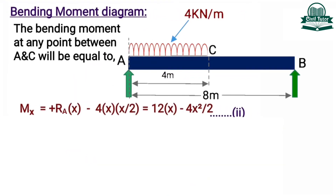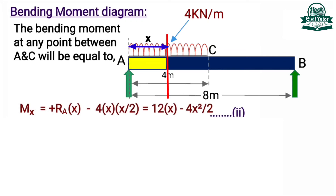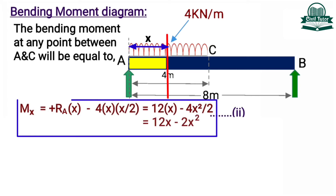The third step is to draw the bending moment diagram. For that we need to calculate the values of bending moment at points A, B, C, and D. Let's consider a section between A and C at a distance of x from point A. The bending moment at section XX will be given by Mx equal to support reaction RA into x minus load intensity 4 into x into x by 2, where x by 2 is the centroid of the loading. This simplifies to 12x minus 2x squared. Let's mark this as equation two.